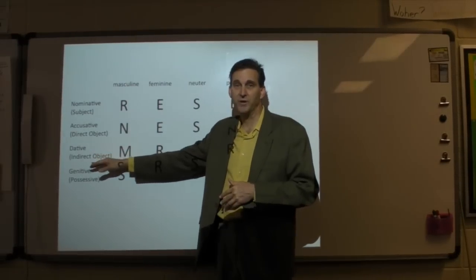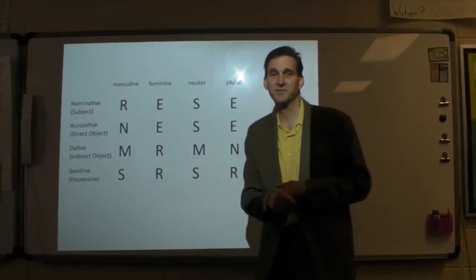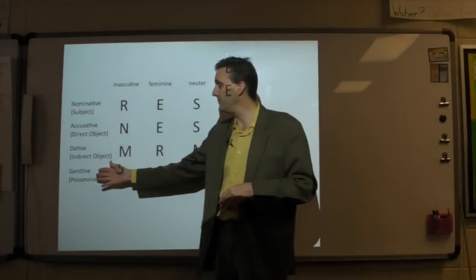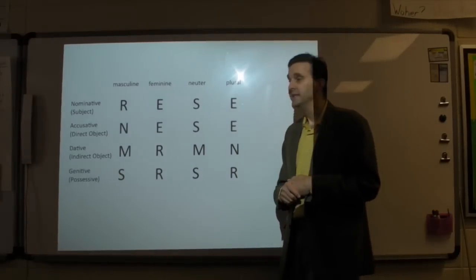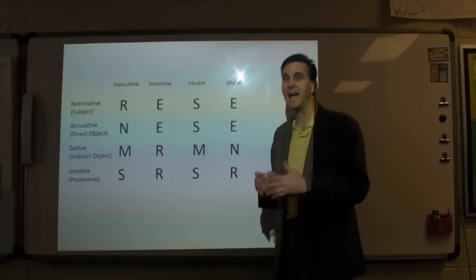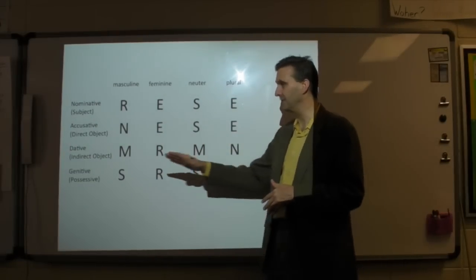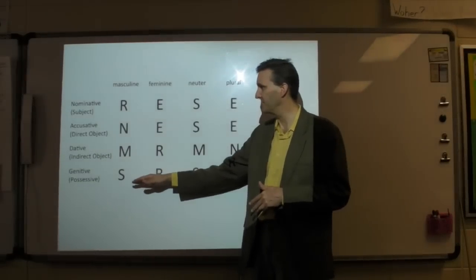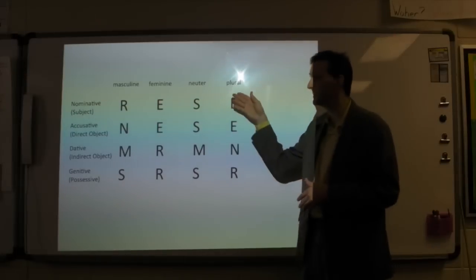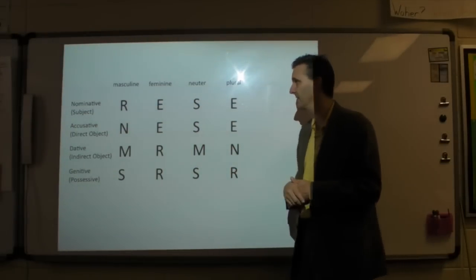The accusative can be more than the direct object. These three bottom ones can also involve objects and prepositions, but we'll get to that in one of our lessons. The bottom one, the genitive, is a special possessive form that we really don't have in English, not exactly anyway. So: nominative, accusative, dative, and genitive — basically a subject, a direct object, an indirect object, and a special possessive form.